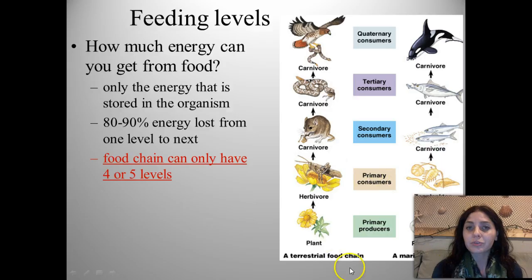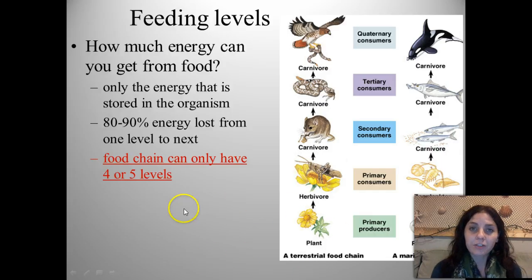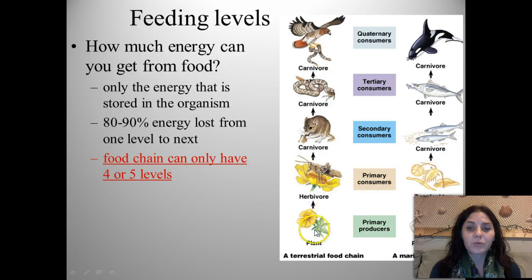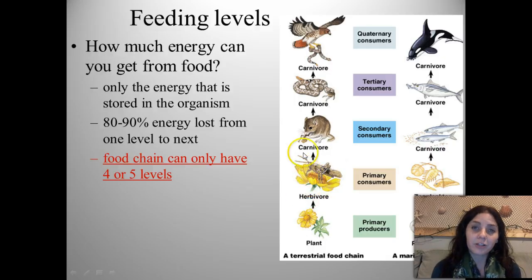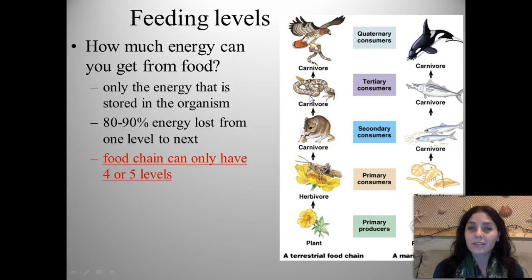Here are two examples of food chains. This is a terrestrial — meaning on the land — food chain. We have our sun giving its energy to our primary producer, which in this case is a flower. The flower is eaten by a primary consumer, the grasshopper. The primary consumer is eaten by the secondary consumer, the kangaroo rat. The kangaroo rat is eaten by a tertiary consumer, the rattlesnake. And then the rattlesnake is eaten by a quaternary consumer, the hawk.